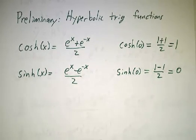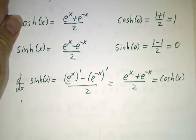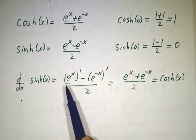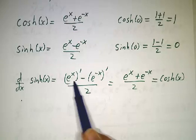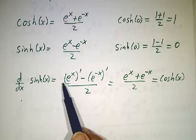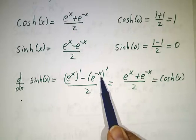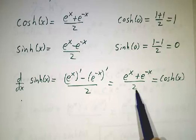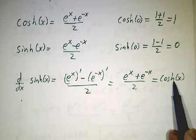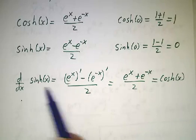Now the derivatives of these functions: the derivative of sinh — you take the derivative of e^x minus the derivative of e^(-x). The derivative of e^x is e^x, and the derivative of e^(-x) is minus e^(-x), so the derivative of sinh is just cosh. Exactly the same as the way the derivative of sin is cos.